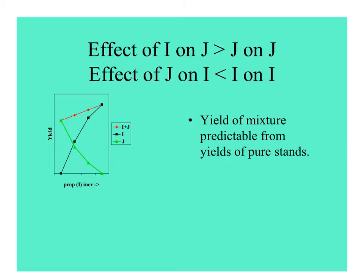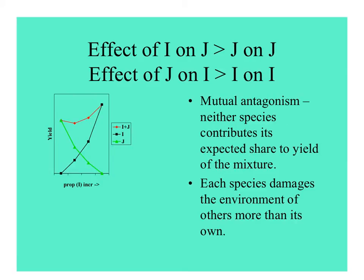In one case, the effect of I on J is greater than the effect of J on itself, and the effect of J on I is less than the effect of I on I, so J being present relieves I from self-competition. The yield is still predictable from the yield of the pure stands. If interspecific competition is stronger than intraspecific competition — the effect of I on J greater than J on itself, and the effect of J on I greater than I on itself — we have mutual antagonism. When grown together, the yield of the mixture is depressed over what it would be if grown separately, showing each species is more destructive to the other than to individuals of its own species.